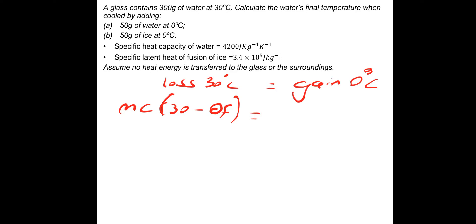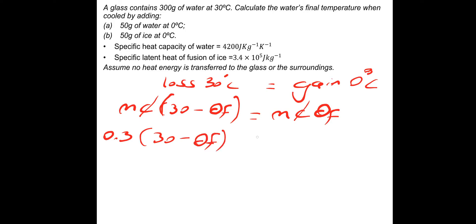That equals the gain in thermal energy from the zero-degree water: mass times specific heat, times the change in temperature. Because it starts at zero, the change is going to be the final temperature minus zero, which is just the final temperature. Putting in numbers: the mass of the 30-degree water is 300 grams, which is 0.3 kg. You can see that the specific heat cancels out in this instance. So we have 0.3 times (30 minus θf) equals the mass of the zero-degree water, which is 50 grams — 0.05 kg — times θf.